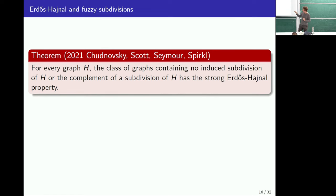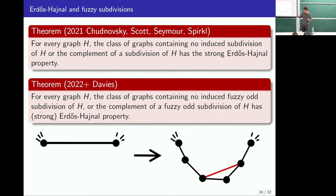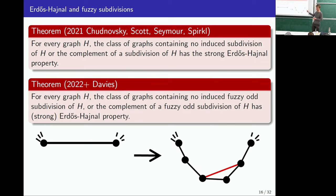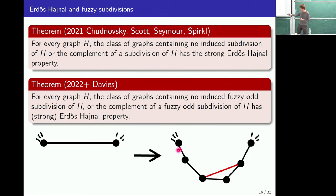What we prove for pivot minors is very close to this. I can tell you exactly the induced subgraphs we need to forbid. We prove a version which is a strengthening, where we replace 'subdivision' by what we call a fuzzy odd subdivision. When replacing an edge with something, we replace it with an odd length path, but where we possibly have one extra edge along this path — forming a triangle, but only one such triangle, and only in the interior of the path.